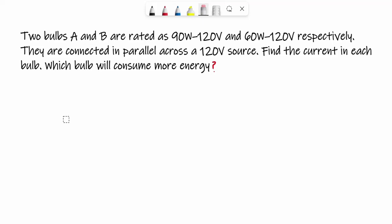Let's start with the next one. It says two bulbs A and B are rated as 40W-120V and 60W-120V respectively. They are connected in parallel across a 120 volt source. Find the current in each bulb, which bulb will consume more energy.